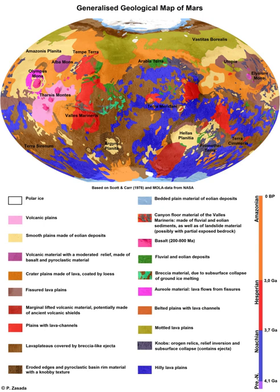In planetary science, the term geology is used in its broadest sense to mean the study of the solid parts of planets and moons. The term incorporates aspects of geophysics, geochemistry, mineralogy, geodesy, and cartography. A neologism, areology, from the Greek word Ares, sometimes appears as a synonym for Mars's geology in the popular media and works of science fiction, e.g. Kim Stanley Robinson's Mars Trilogy.